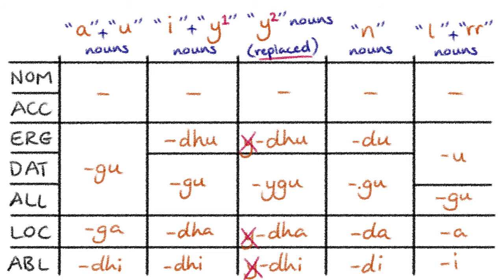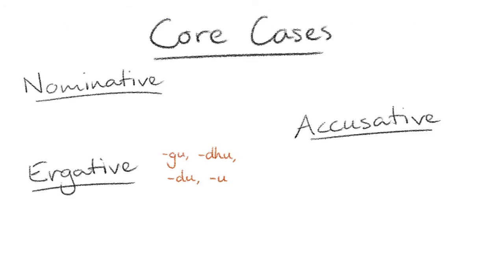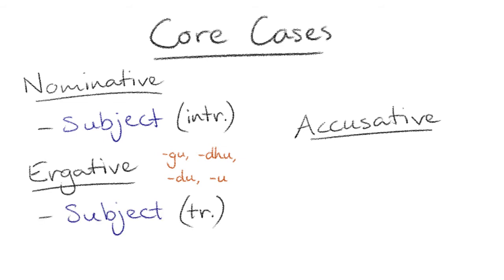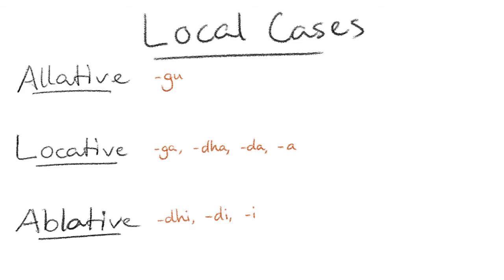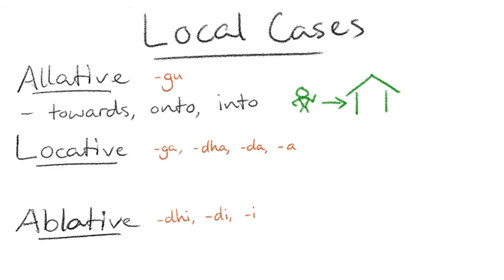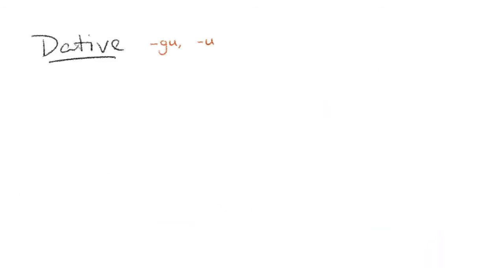Gamilarai nouns are declined according to seven cases, however there are only four or five different forms of each word. There are three core cases for morphosyntactic alignment: the nominative marking an intransitive subject, the ergative marking a transitive subject, and the accusative marking a transitive object. Then there are three local cases for spatial location: the allative for movement towards something, the locative for being on, at, or inside something, and the ablative for movement away from something. And then there's the dative case, which has a couple of functions including possession, purpose, and benefactive.